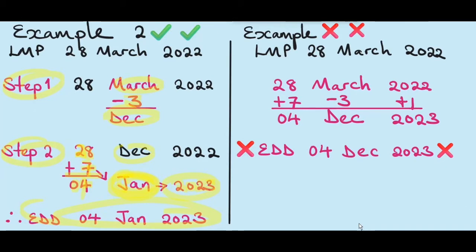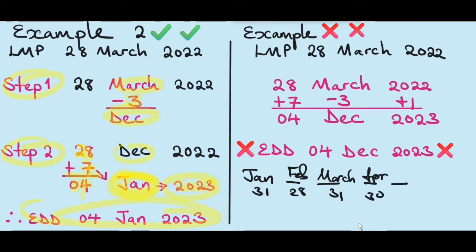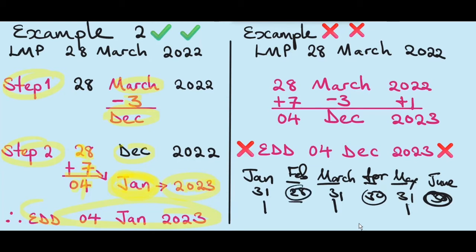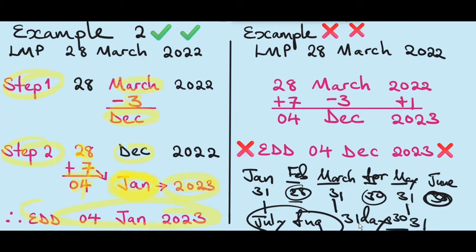When calculating EDD using Naegele's rule, it's important to remember how many days a month has. January has 31 days, February has 28 days, March has 31 days, April has 30 days, May has 31 days, June has 30 days. Notice that every alternate month is 31 days — you skip a month and the other is 30 days — except for February. When you come to July and August, these two always have 31 days. But after that, the same pattern resumes — alternate months of 31 and 30 days. You can verify this on a full calendar.